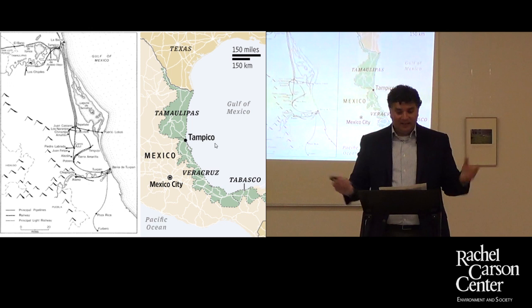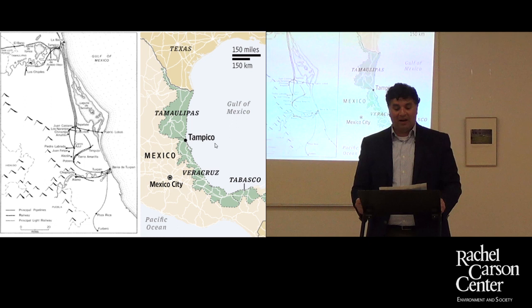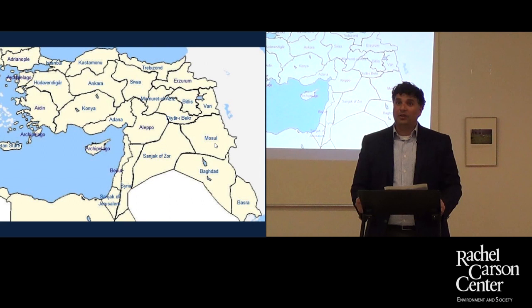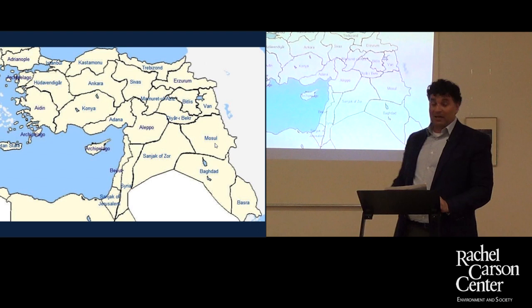This dependency on foreign oil — a phrase we've heard a lot in the past 15 to 20 years — was a British concern, and it drove British ambitions in Mesopotamia during the war. One of the reasons the British were so keen on sending troops, mostly Indian troops, to Mesopotamia was to control oil fields in the provinces of Mosul, Baghdad, and Basra.